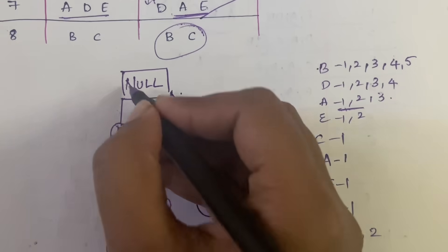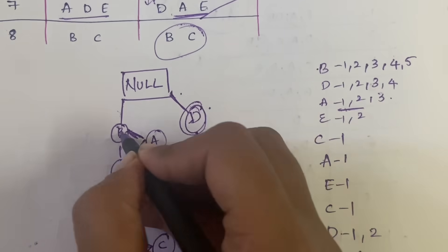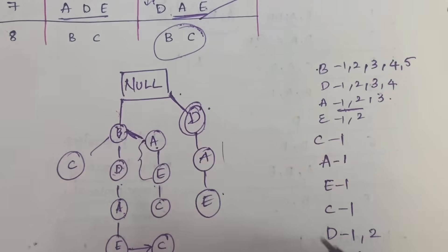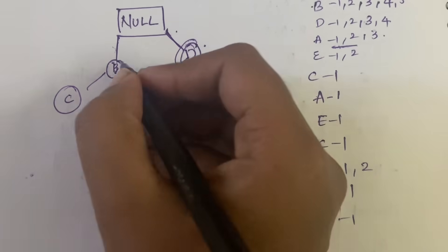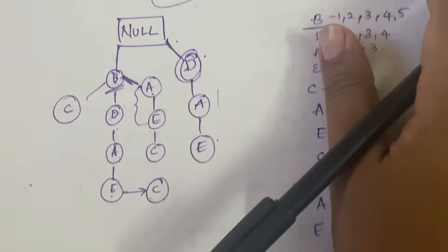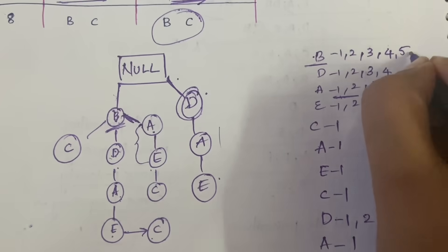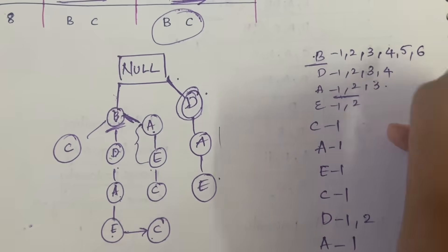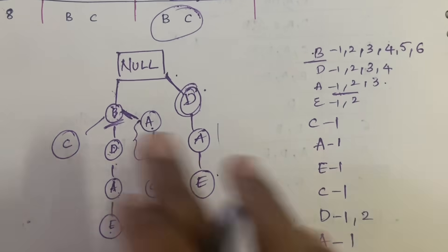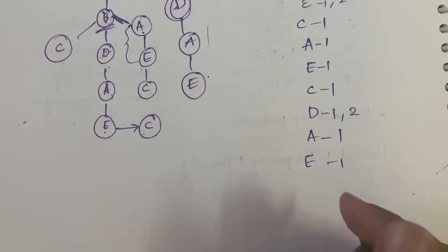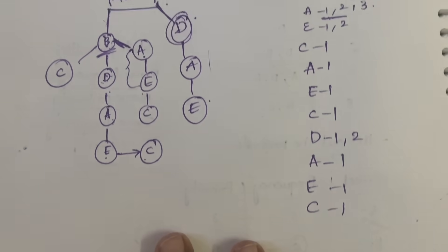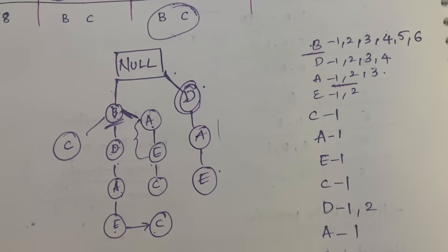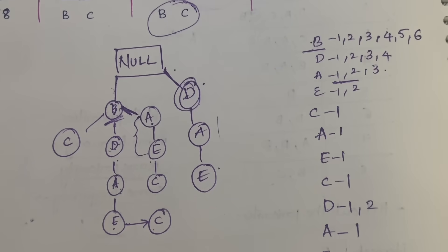The last transaction is B, C. From the null root we have B attached. Since there is no C under B in this branch, we add C as a new node. We update B's occurrence to 6 and write C equal to 1. This is how you construct the FP tree using the transactions in priority order.